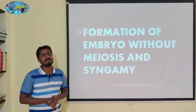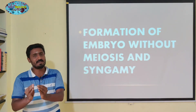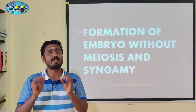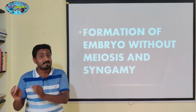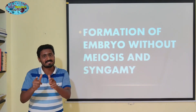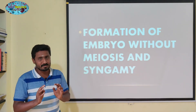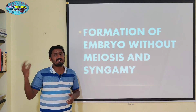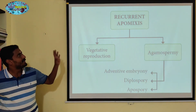Agamospermy — in this agamospermy, the most important thing is the distinction between non-recurrent type and recurrent type of meiosis. This is a recurrent type of apomixis.